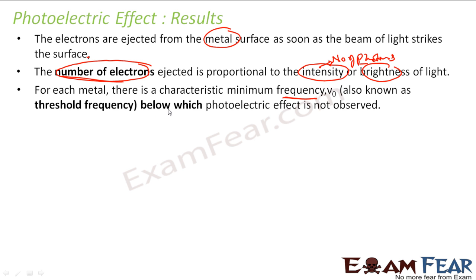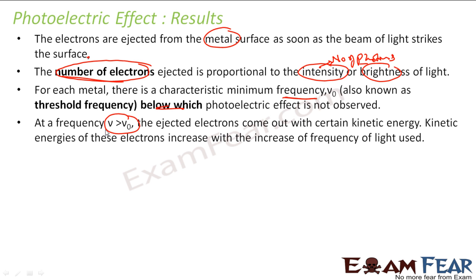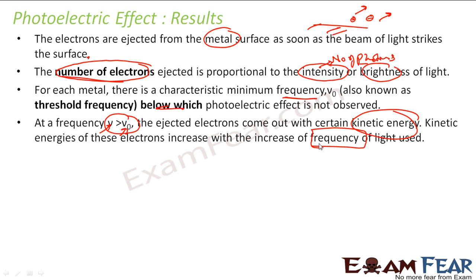For each metal, there is a minimum frequency below which the photoelectric effect is not observed. Also, if the frequency you are giving is greater than the threshold frequency, the ejected electrons come out with some kinetic energy. The electrons which are coming out have some kinetic energy, and that kinetic energy depends on the frequency of light used — not on the number of photons or the brightness of light.